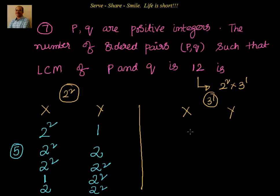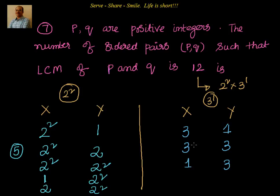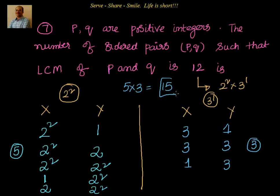Now for the factor 3: since LCM is 2²×3, either X or Y must have 3. If X has 3, Y can have 1 or 3 — two options. If Y has 3 and X has only 1 — that's one more. So we get 3 combinations for the factor 3. Combined with the 5 from 2², the total is 5×3 = 15 ordered pairs.